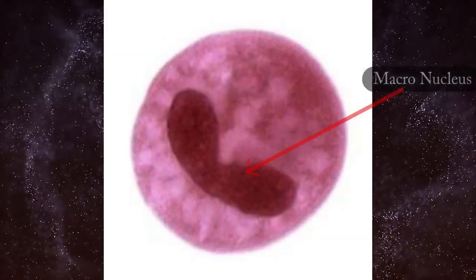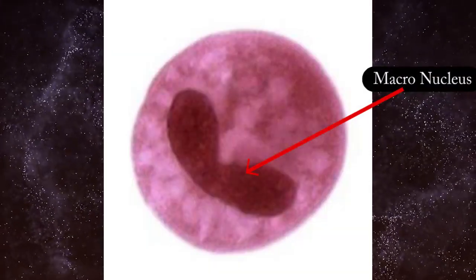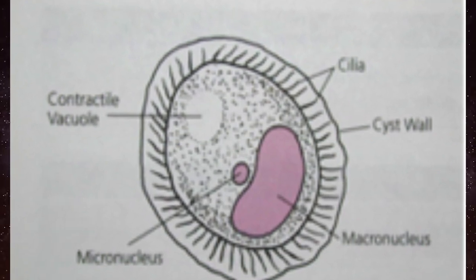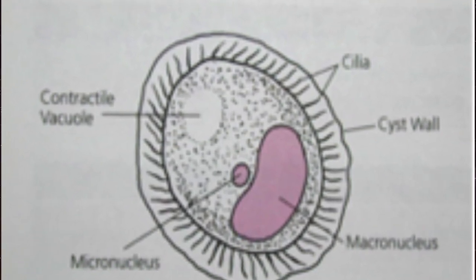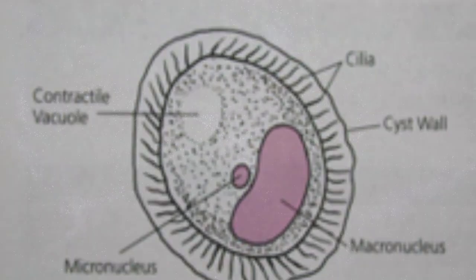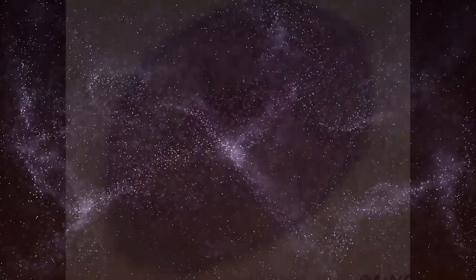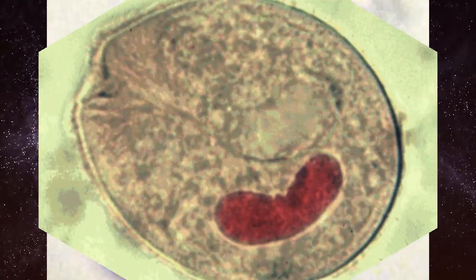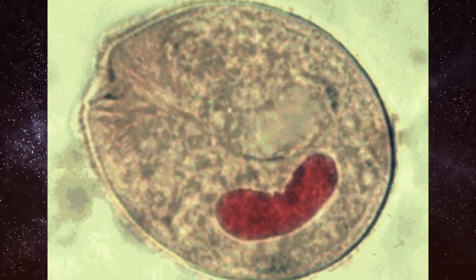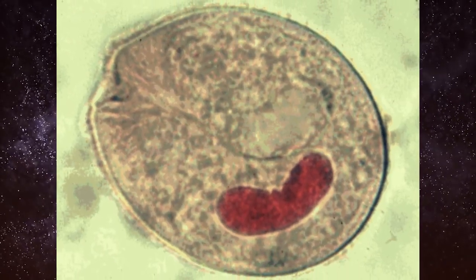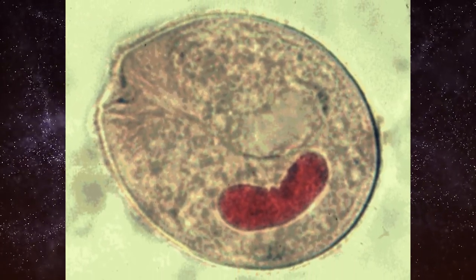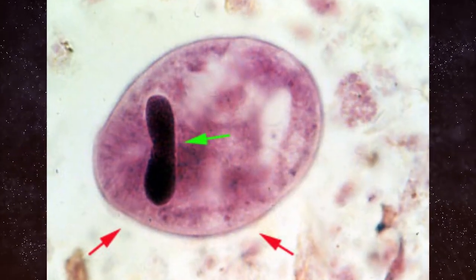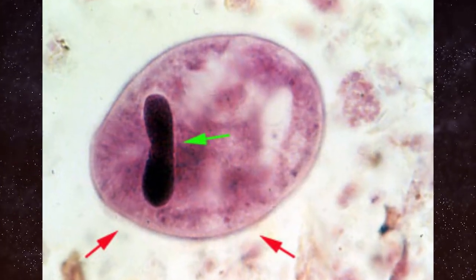The macronucleus is large and kidney-shaped, and the micronucleus is small and round, and not clearly visible. The cytoplasm is granular and greenish, filled with inclusion bodies. Often the trophozoite form can be seen faintly inside.